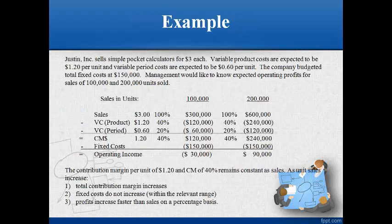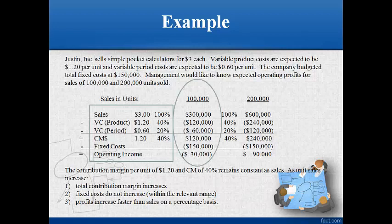Let's look at an example with some numbers. Management would like to know the estimated operating income when sales are 100,000 and 200,000 units. The contribution margin format income statement is used. Write the format and the amount per unit on the left side next to the line description. The dollar amounts in the column of quantity sold is equal to the per unit amount multiplied by the quantity of units sold. Notice the contribution margin percentage does not change. Fixed costs are the same regardless of the quantity sold. As units sold increases, operating income increases at a greater percentage than sales because fixed costs do not change.